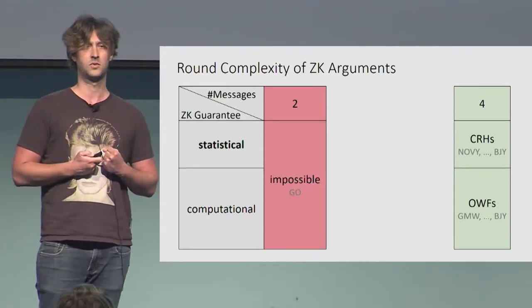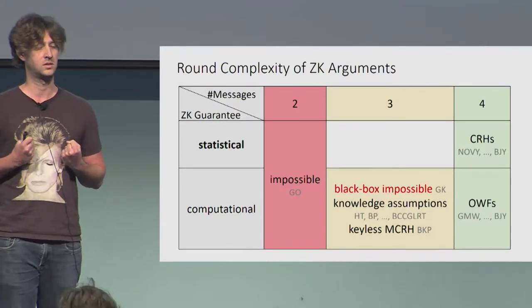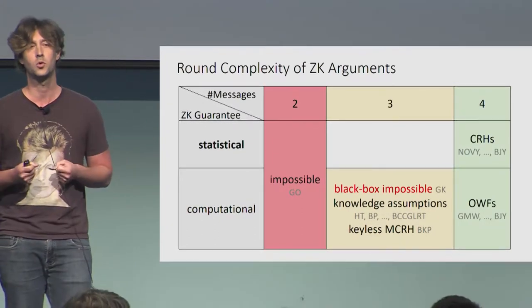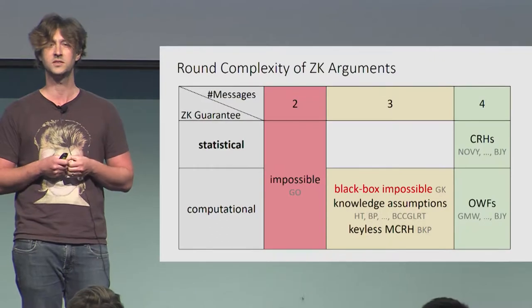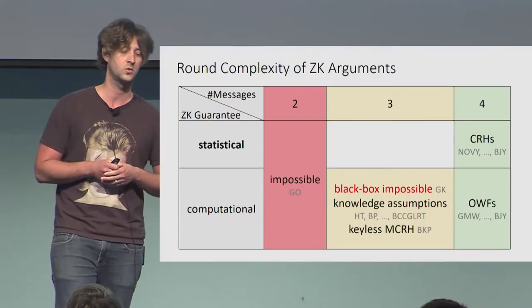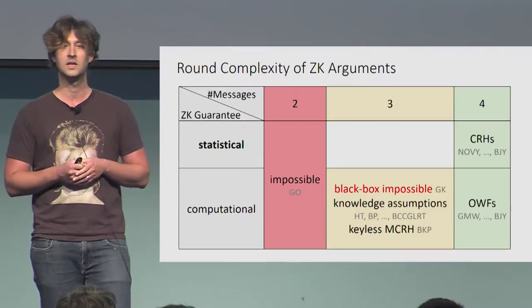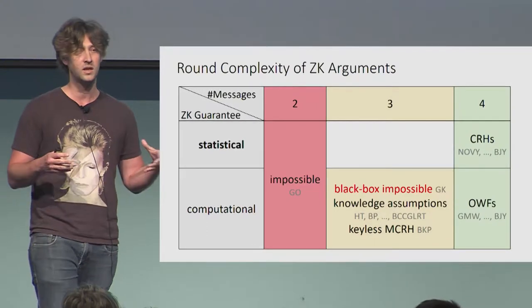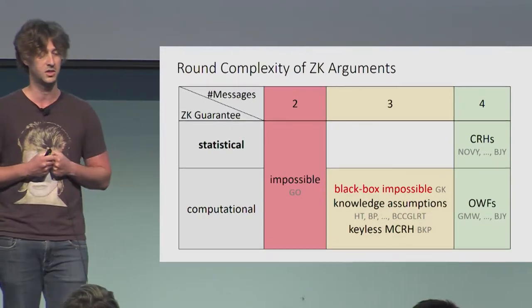What is the exact round complexity of zero-knowledge? What about three messages? Can we have such protocols? There is a difficulty: you cannot have protocols with black-box simulation. Nevertheless, in computational zero-knowledge there do exist protocols — under non-falsifiable knowledge assumptions for quite a while, and more recently also based on a falsifiable assumption on the multi-collision resistance of k-wise hash functions. You heard a little bit about it from Cody, and we're going to touch it again in a bit.